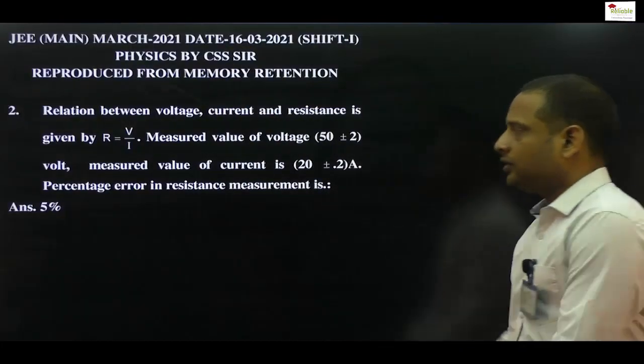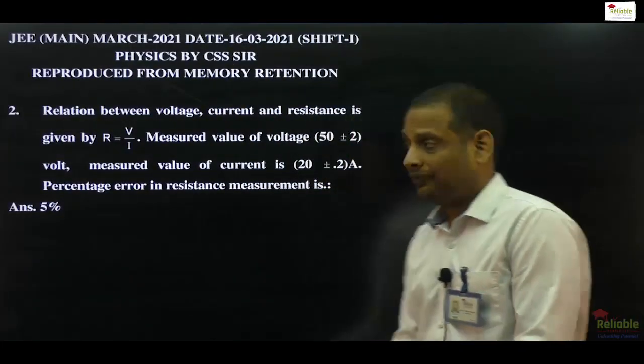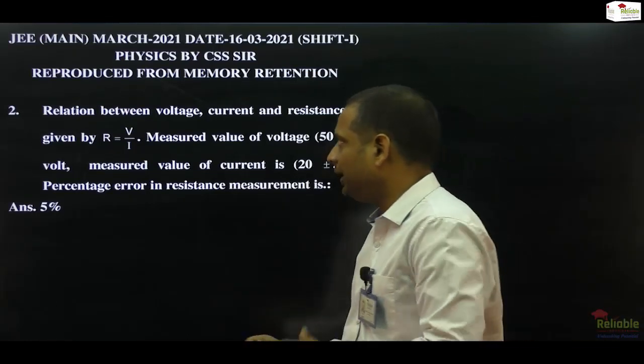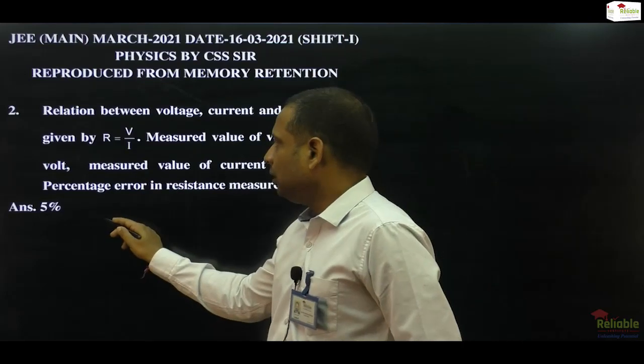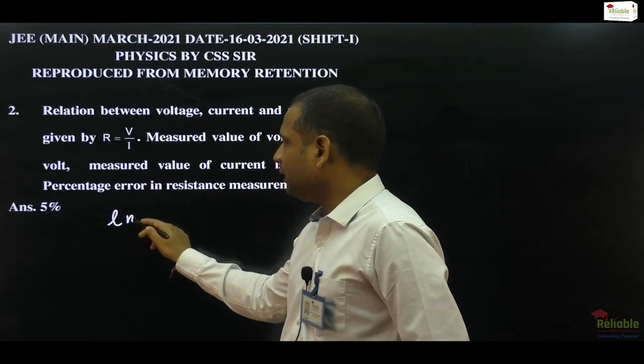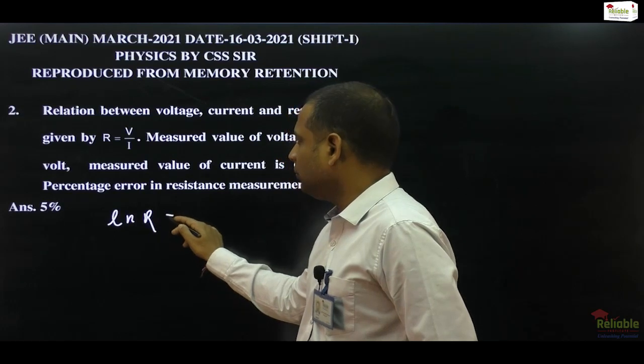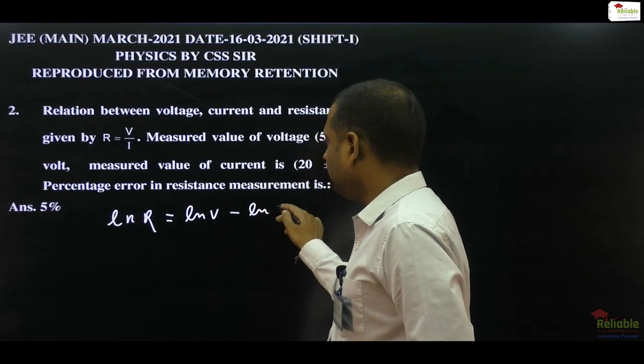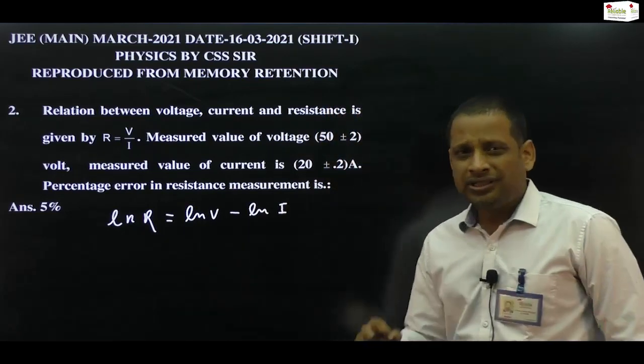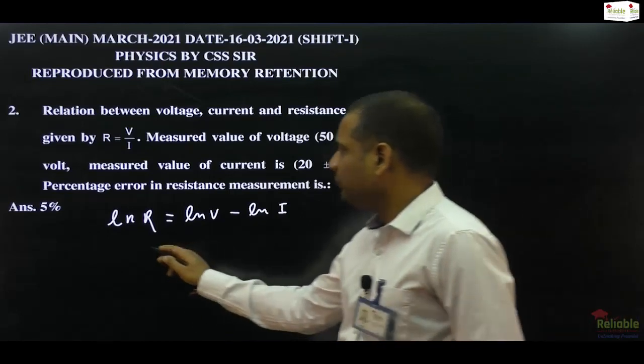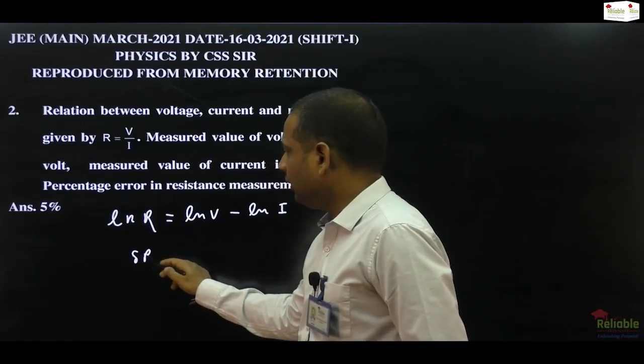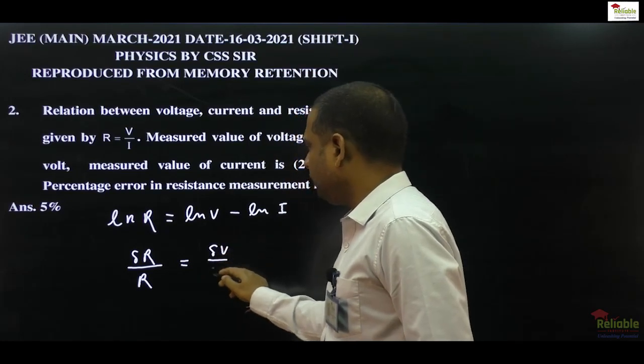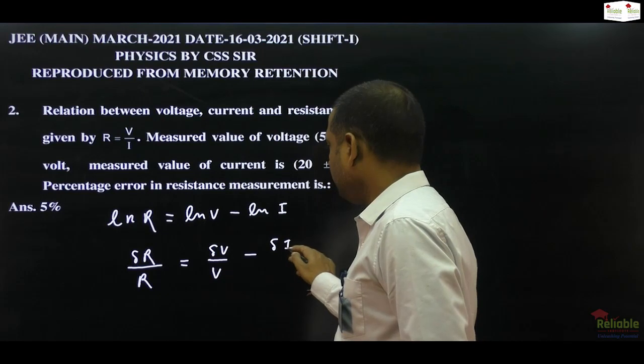Now coming to the second question, which is from error analysis. Again, it is a simple question. You are given a relation: resistance is equal to voltage upon current. And if I take logarithm on both sides, I can write ln R is equal to ln V minus ln I. Because the changes are very small, I can take partial differentiation: del R divided by R is equal to del V divided by V minus del I divided by I.